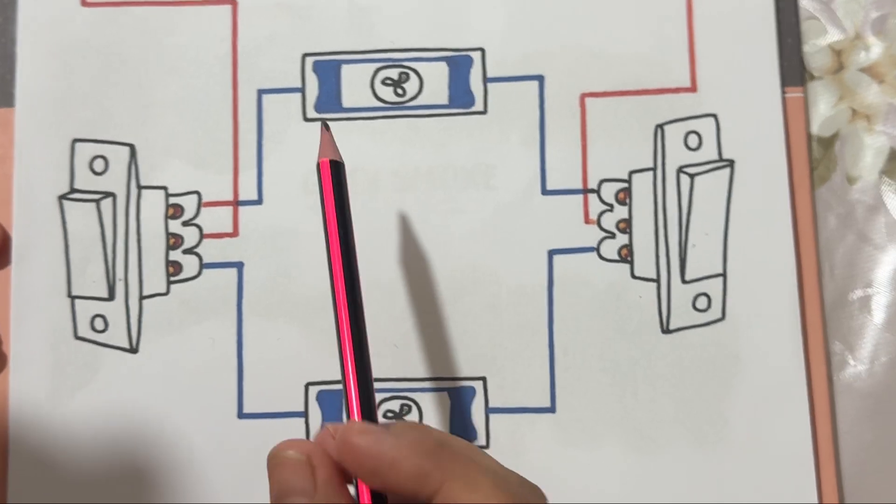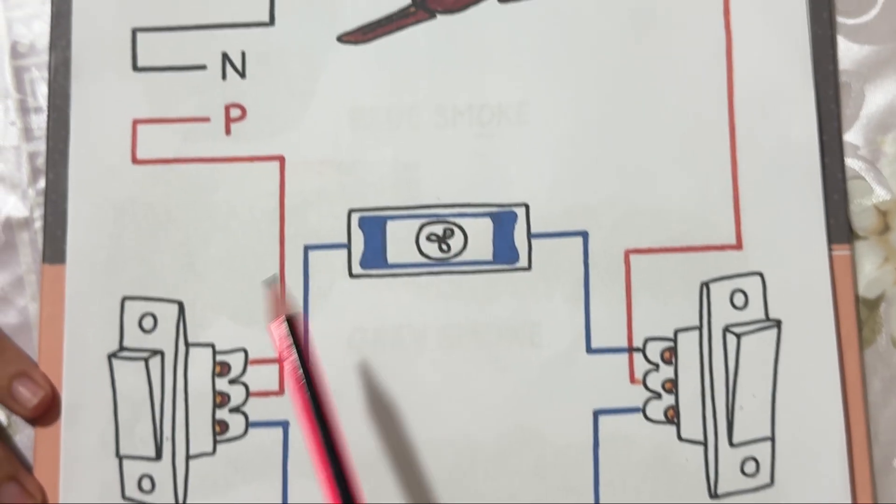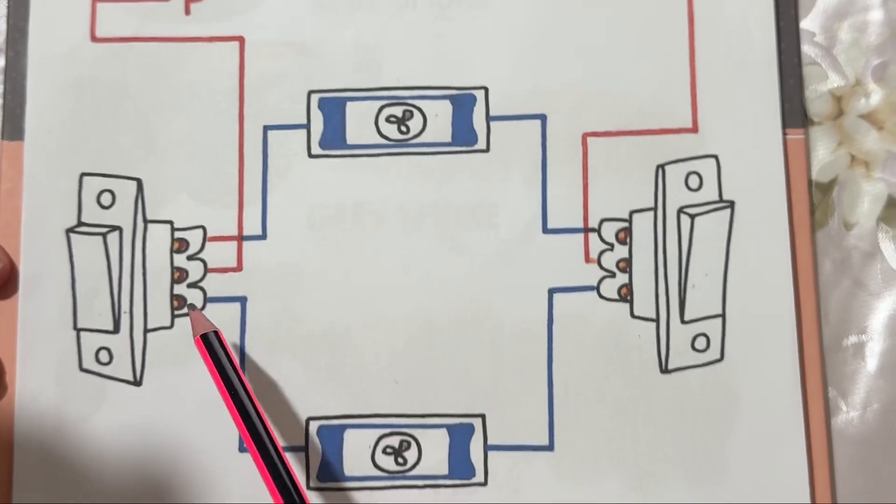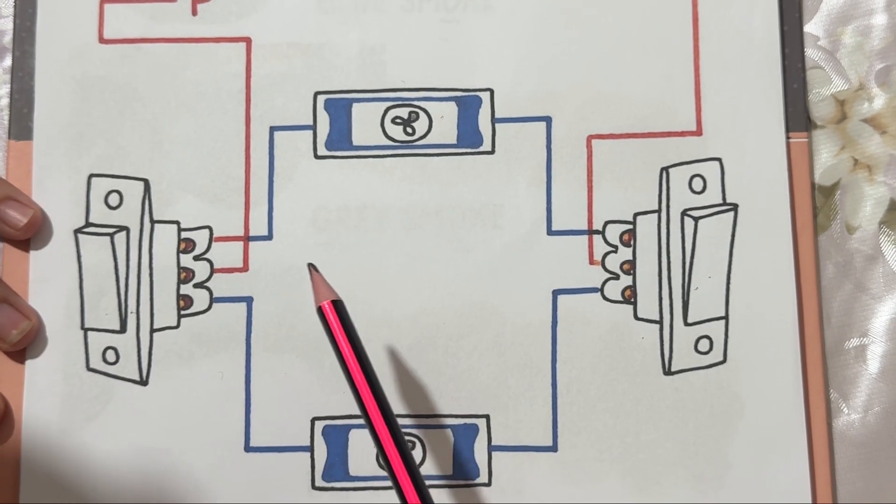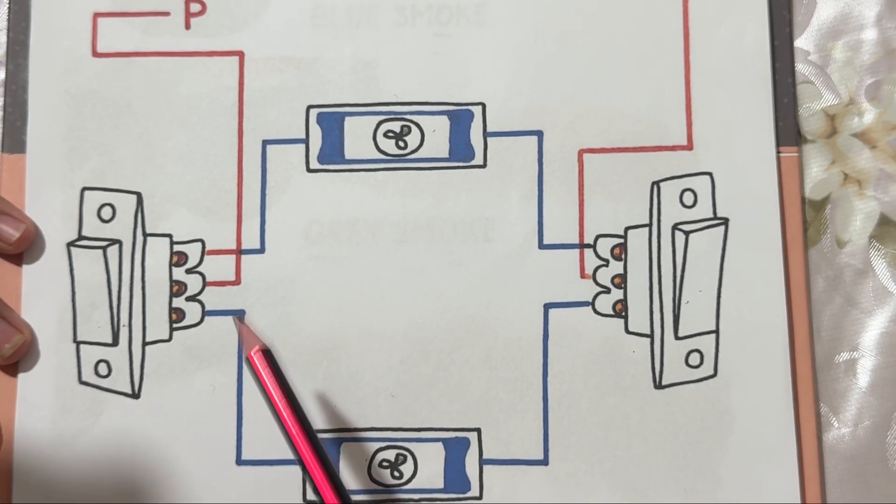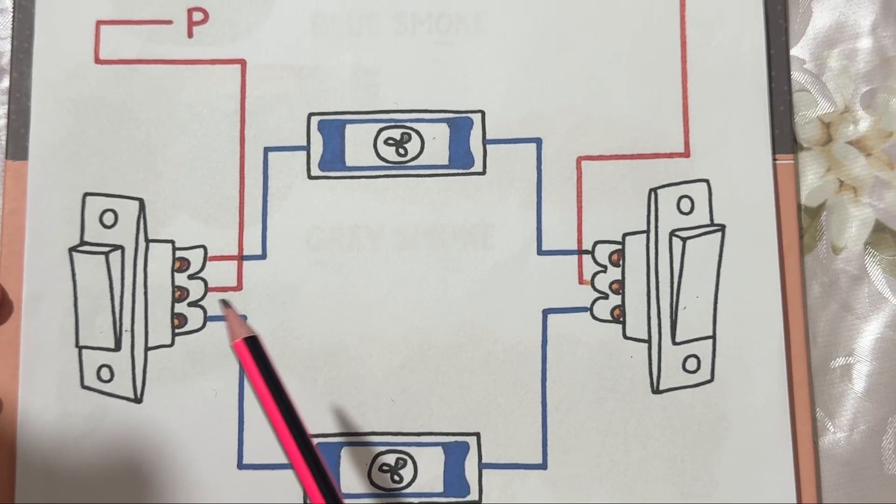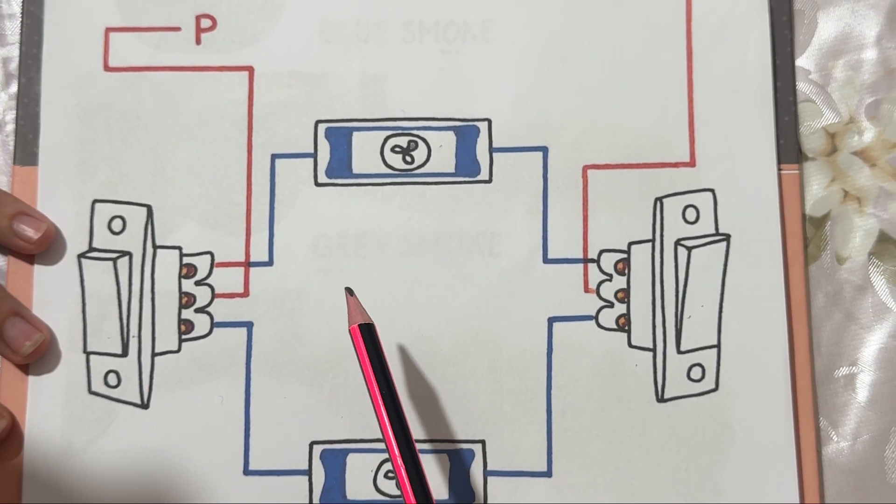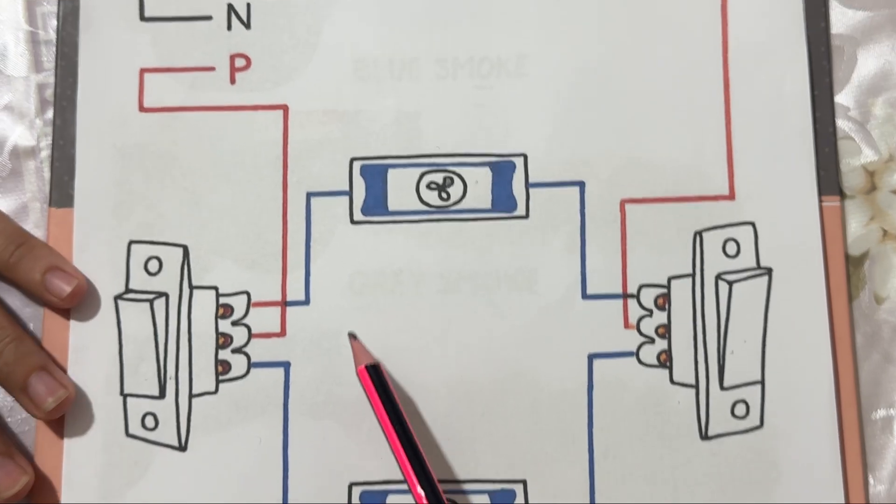So that's how a ceiling fan is wired with two switches and two regulators. Always remember, if you are doing this wiring at home, follow safety precautions and hire a qualified electrician. Thanks.